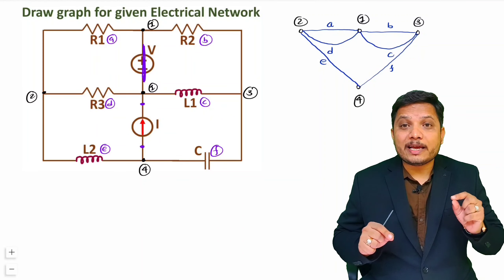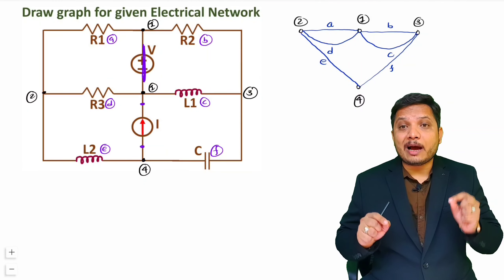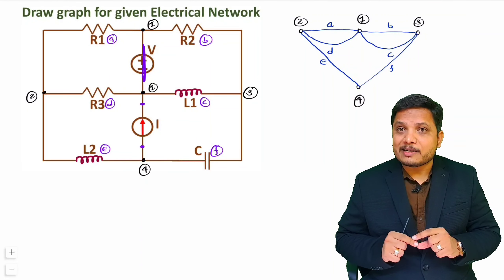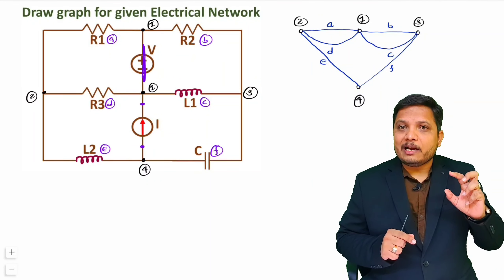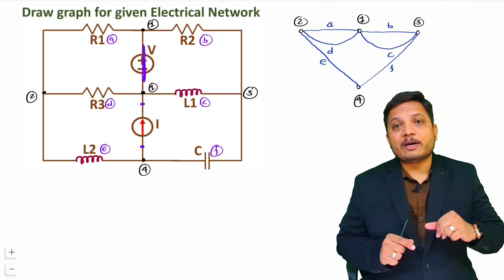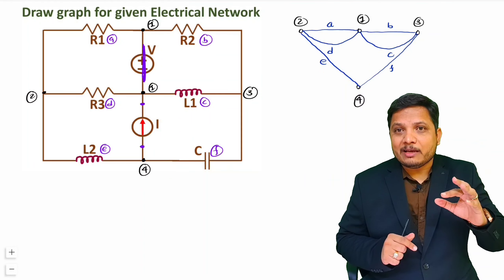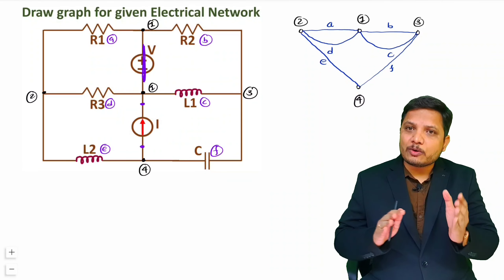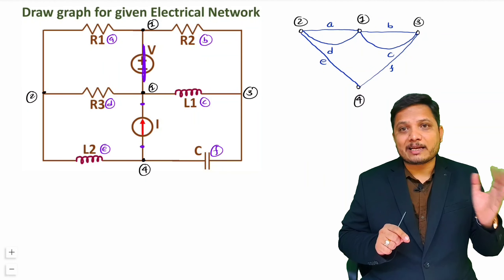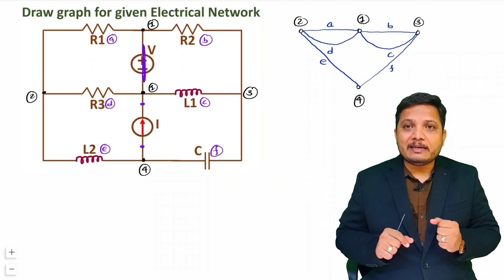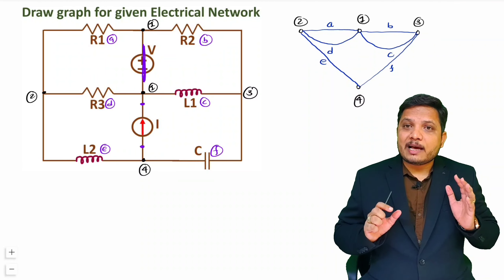This is not an oriented or directed graph. In a directed graph you have to show direction. Direction doesn't mean current is exactly flowing that way — if current is positive, it flows in that direction; if negative, then the current in that direction is negative. You can show direction randomly; when you calculate current, if it is positive, current flows in that direction. This is a normal graph for an electrical network.